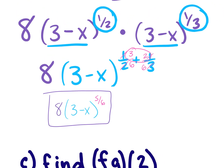If your bases are the same and you're multiplying, you add the exponents to combine. Alternatively, you could put it back into a radical: the index would be 6 (from the denominator), so it would be 8 times the 6th root of (3 minus x) to the 5th power. Either form works.